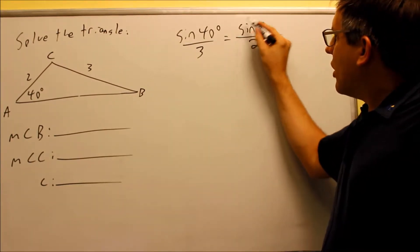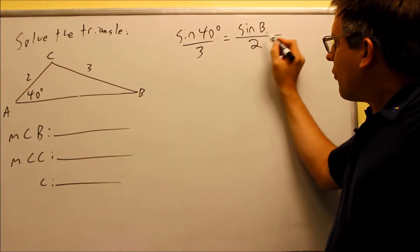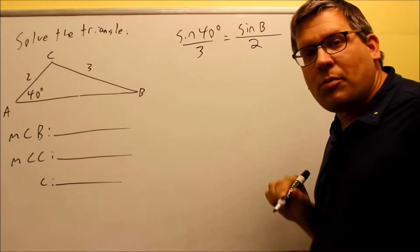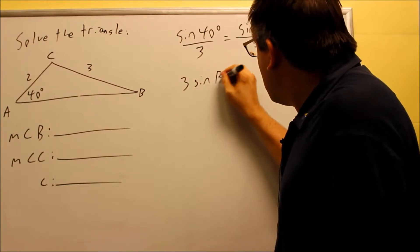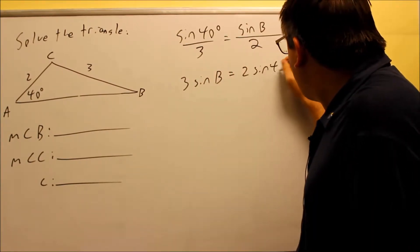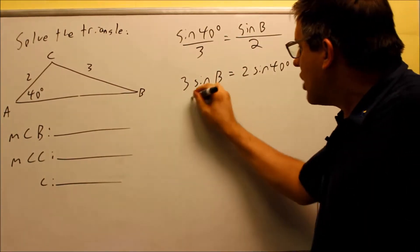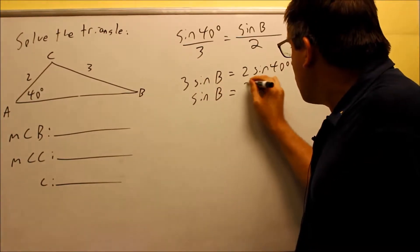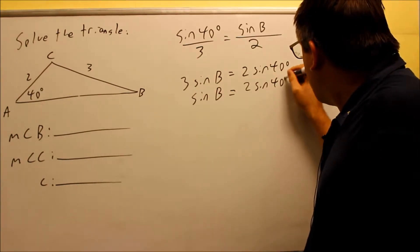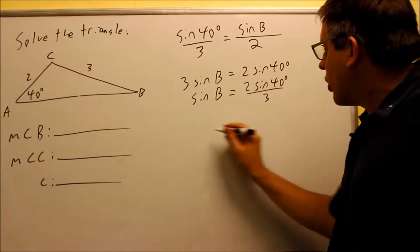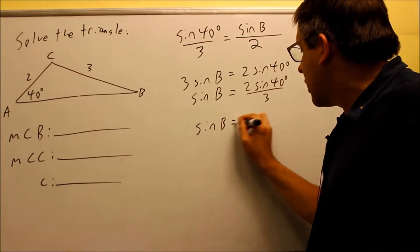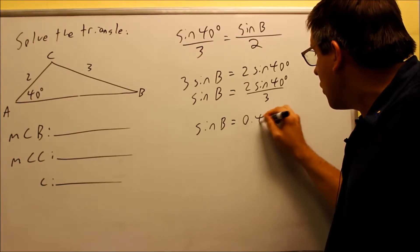We need to isolate B. So first we have to solve for sine B and we're going to do that by cross multiplying. We get 3 sine B is going to equal 2 sine 40. We're going to divide both sides by 3 and you get sine B equals 2 sine 40 divided by 3. The 2 sine 40 over 3, if you put that into a calculator, you're going to get .4285.